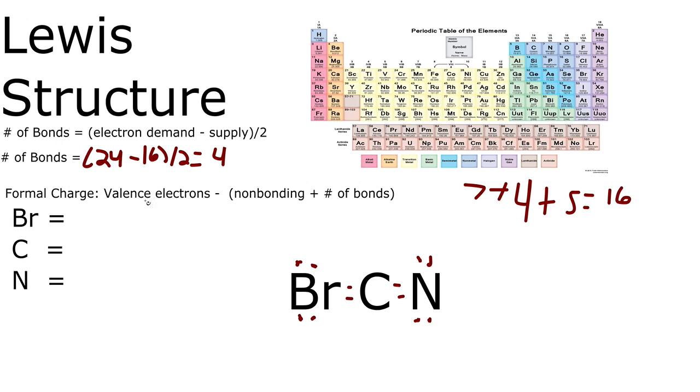However, we'll see that the formal charges are not good and we'll have a separation of charges. We have 7 valence minus 4 non-bonding plus 2 bonds. 7 minus 6 is 1. It's going to be a plus 1.